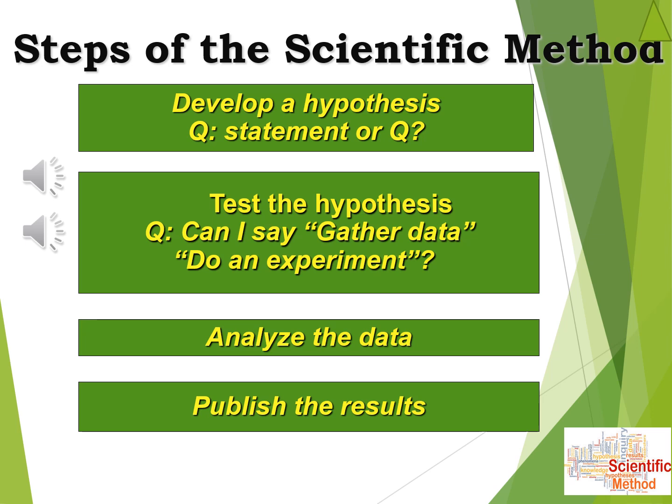For step one, we have 'develop a hypothesis.' The asterisk means I have some cautions based on common mistakes I see students make on tests. You cannot just put the word 'hypothesis' — it's a lazy answer and not a complete concept. 'Develop a hypothesis' is a good answer, but you could also say 'create a hypothesis,' 'state a hypothesis,' or 'formulate a hypothesis.' On the test, definitely give me a phrase involving a hypothesis.